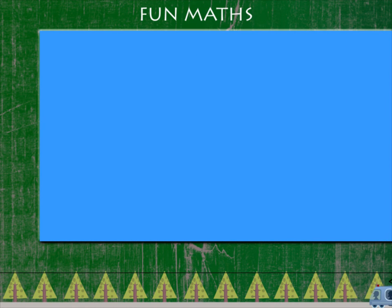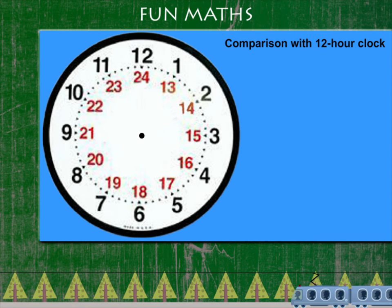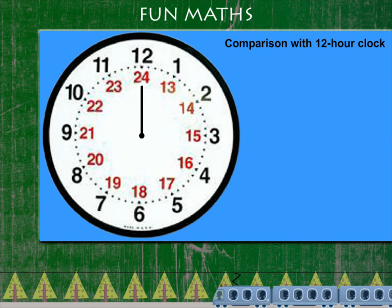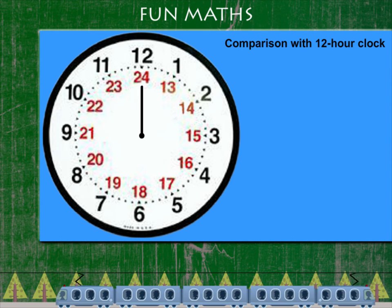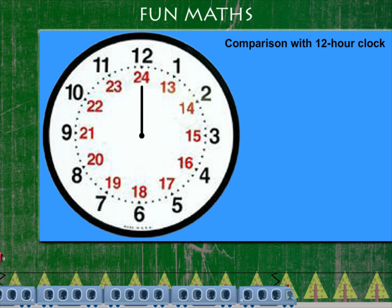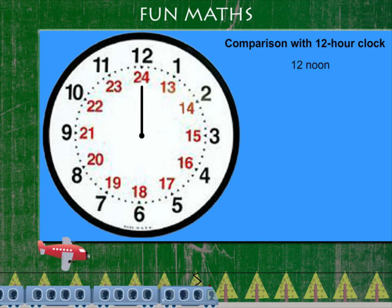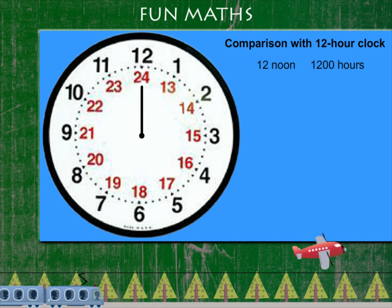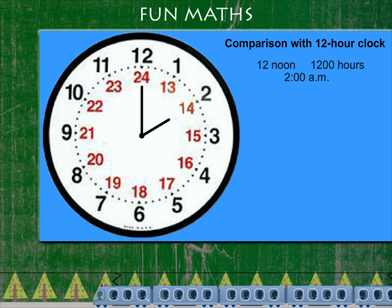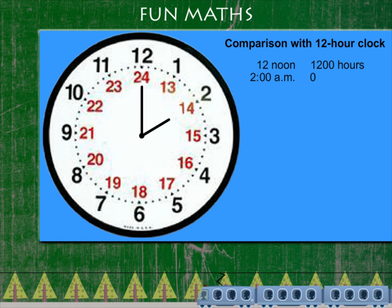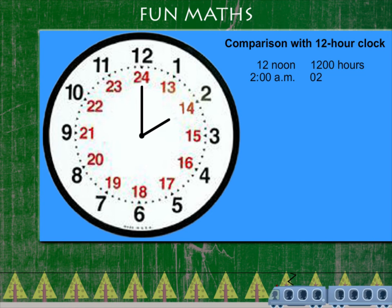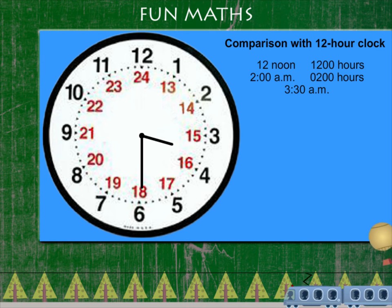Fun maths! Let's compare a 24-hour clock with a 12-hour clock. When it is 12 noon, it is called 1200 hours. When it is 2 a.m., it is 0200 hours. At 3:30 a.m., it is 0330 hours.